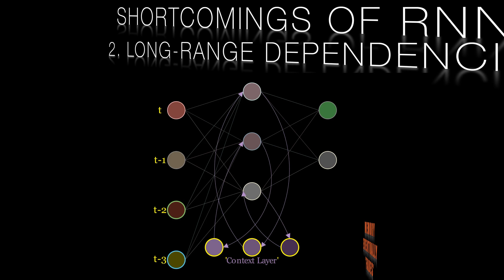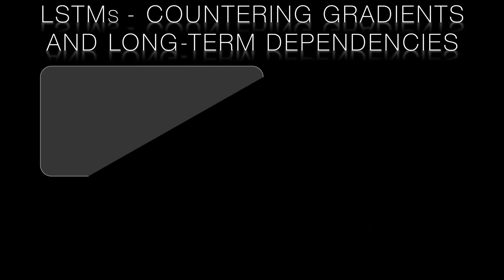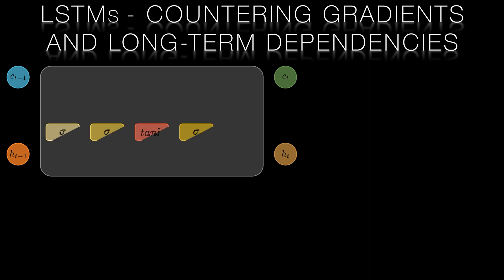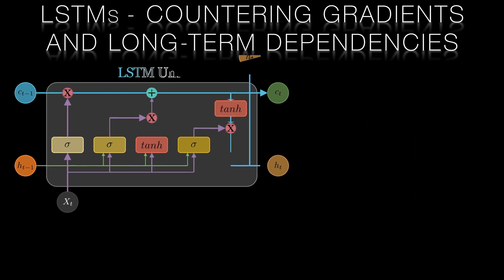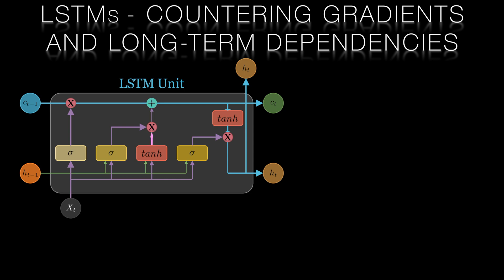To tackle these issues, Hochreiter and Schmidhuber introduced long short-term memory networks in 1997. LSTMs are a kind of recurrent neural network that can learn long-range dependencies much more effectively than traditional RNNs. The key innovation in LSTMs is the introduction of a memory cell which allows the network to store and access information over long time scales.